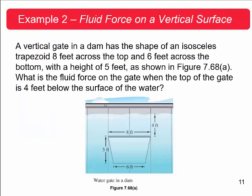All right, so we'll do one example of this so you can see this in action here, okay. So a vertical gate in a dam has the shape of an isosceles trapezoid eight feet across at the top and six feet across at the bottom, all right, with a height of five feet as shown in this figure. So this is the isosceles trapezoid. Here's the eight feet, here's the six feet part, and here's the height, the five feet, okay. What is the fluid pressure of the gate when the top of the gate, so here's the top of the gate, is four feet below the surface?